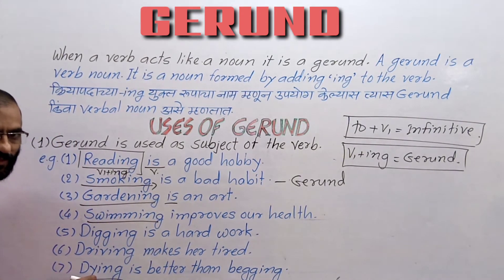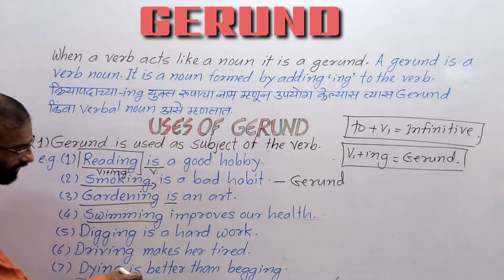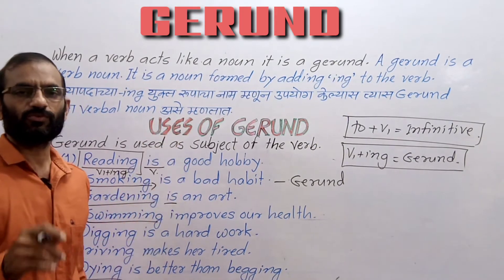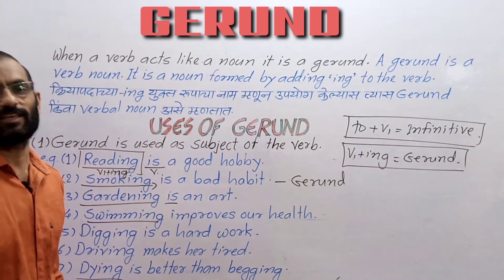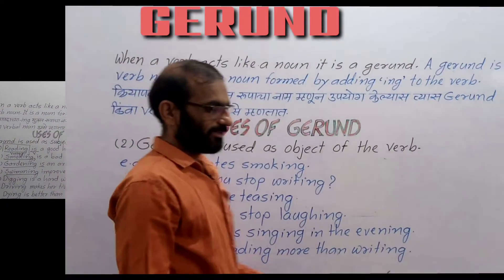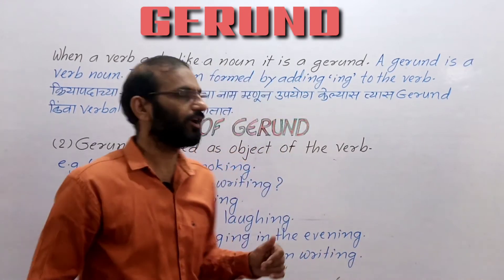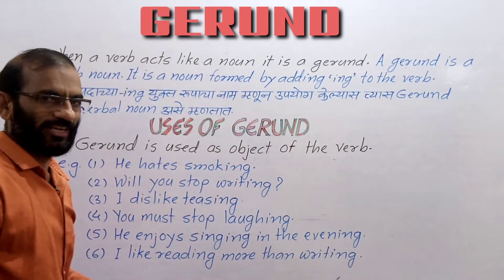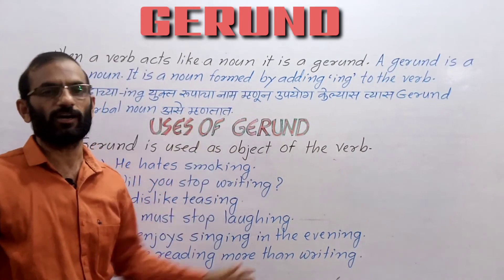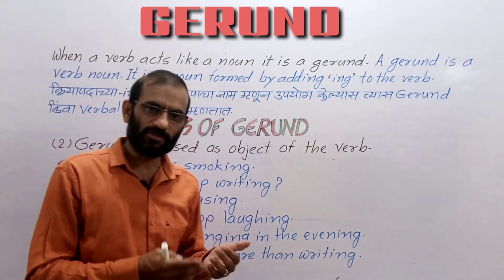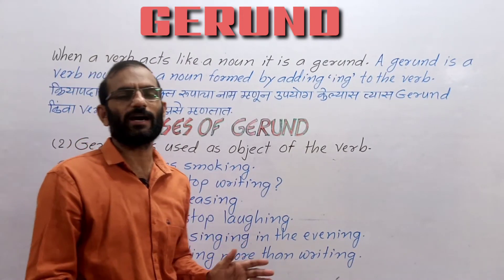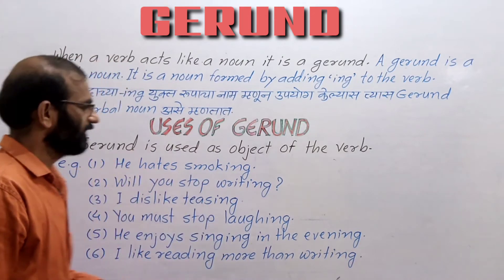'Dying' is gerund in the given sentence. It is used as subject of the verb 'is.' In this way we have seen how gerund is used as subject of the verb. Take a screenshot and let us see the next rule — the second use of gerund. The second use is that gerund is used as object of the verb. Subject comes before the verb and object comes in the predicative part, that is after the verb.